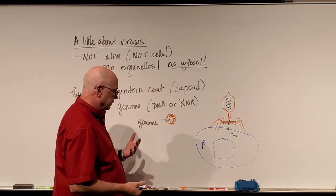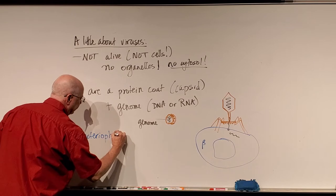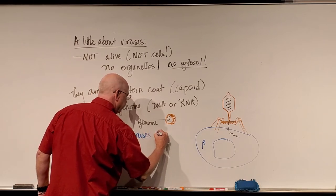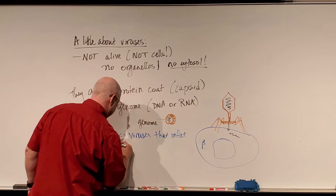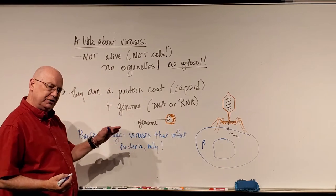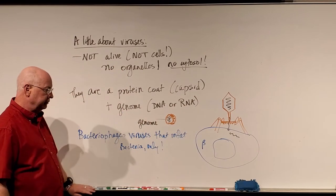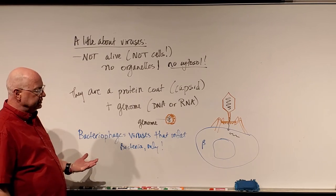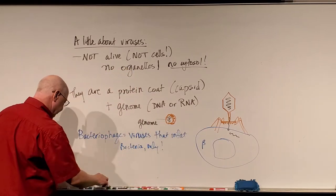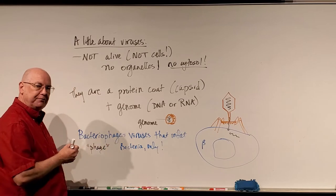There's a whole group of viruses called bacteriophage — I want you to know this term. Bacteriophage are viruses that infect bacteria only; they do not infect eukaryotic cells. Bacteria have their own viruses that can cause impact on them, very often killing the cells. One of the things that happens is bacteria have enzymes that can cut up the phage DNA. Bacteriophage are often referred to simply as phage.